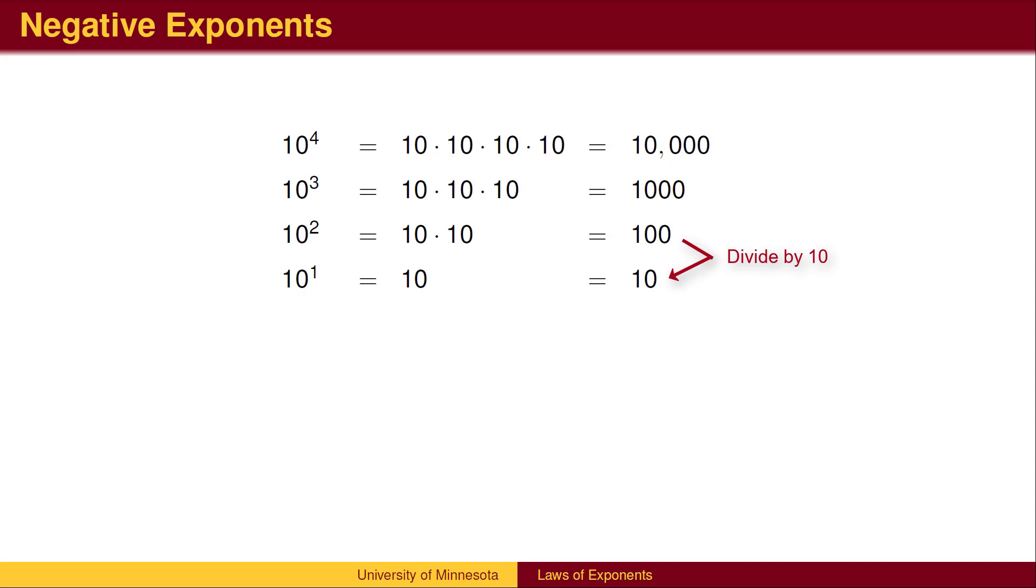Anything to the 1st power will be itself. If we divide once more by 10, we now have no tens remaining. This empty product is the same as multiplying by 1. Anything to the 0 power is 1.